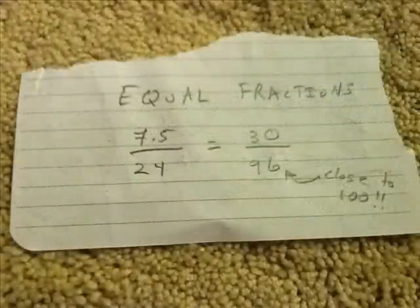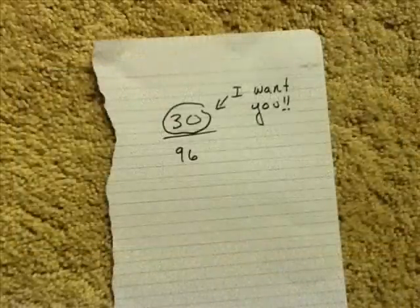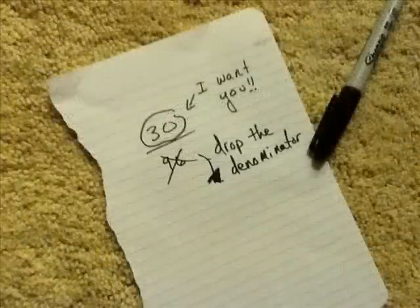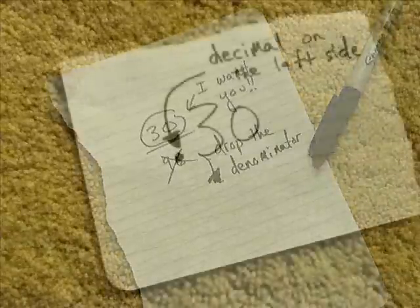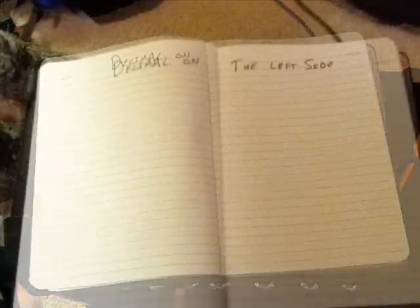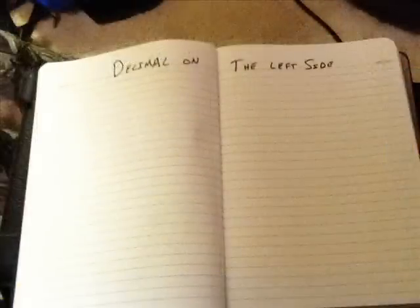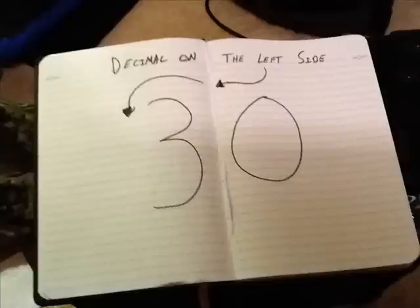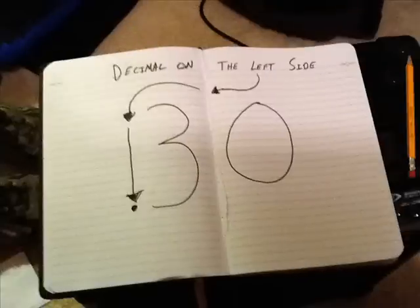Now take your numerator — it is easy as pi. Drop the denominator, put the decimal on the left side.